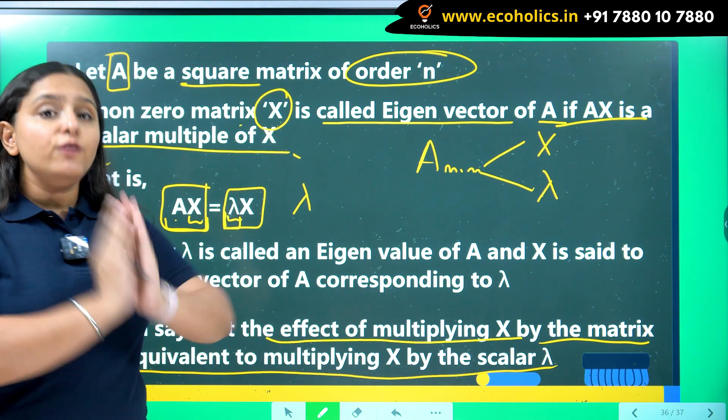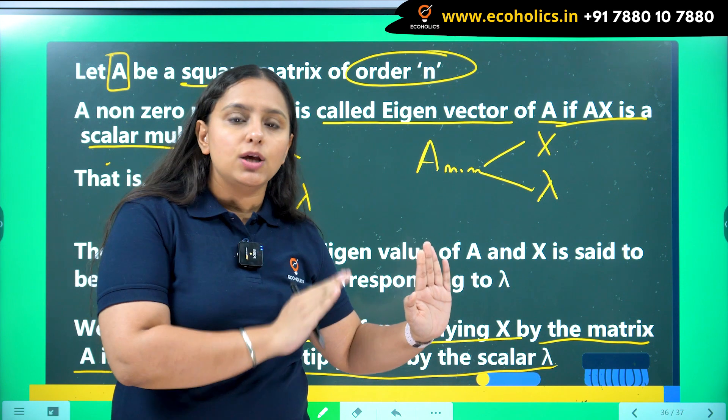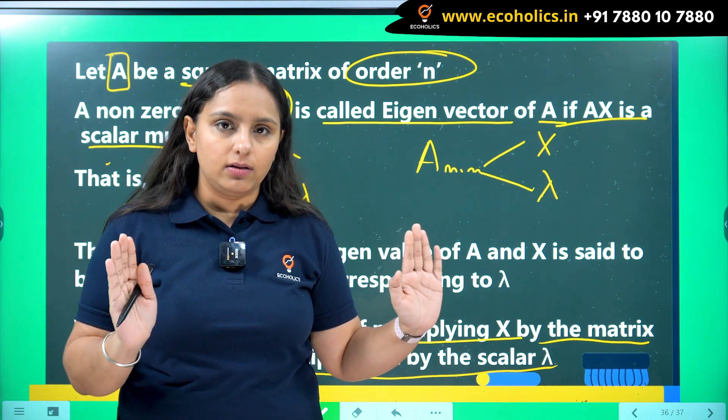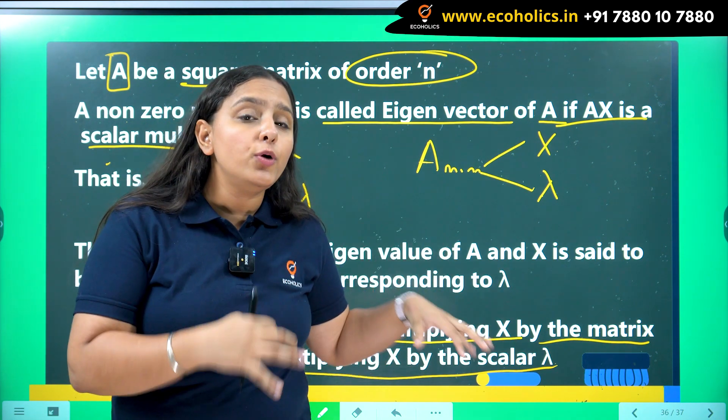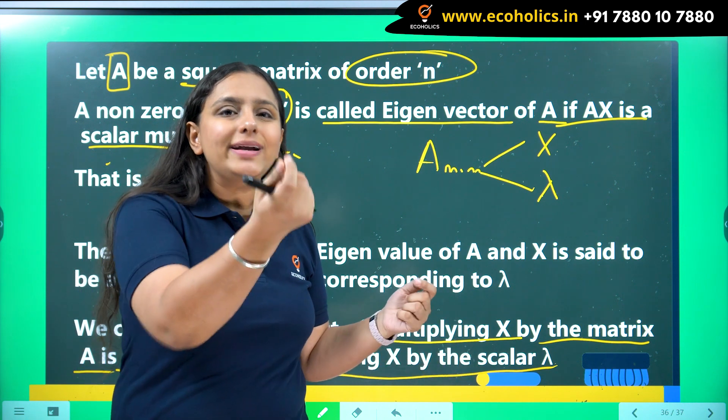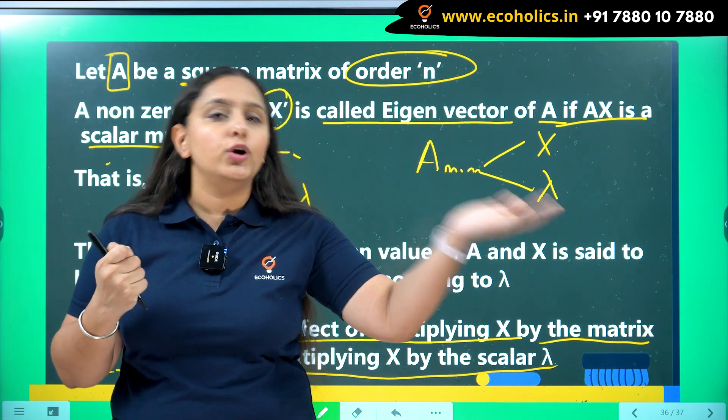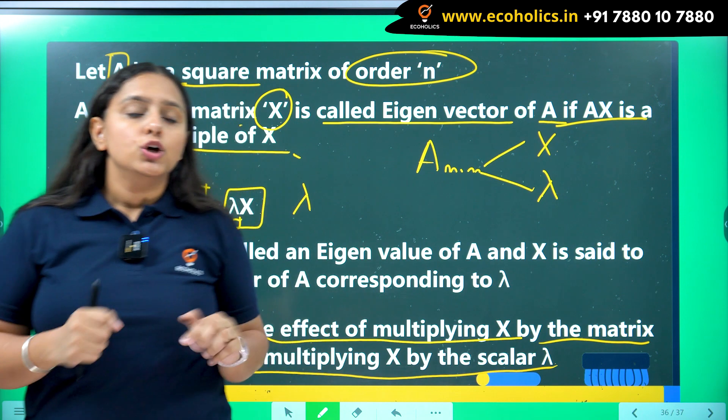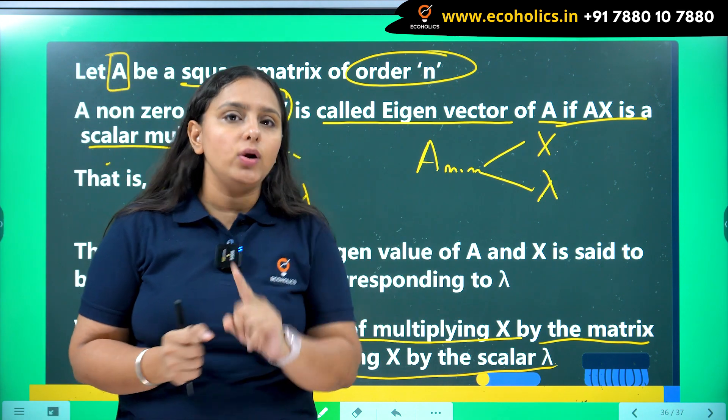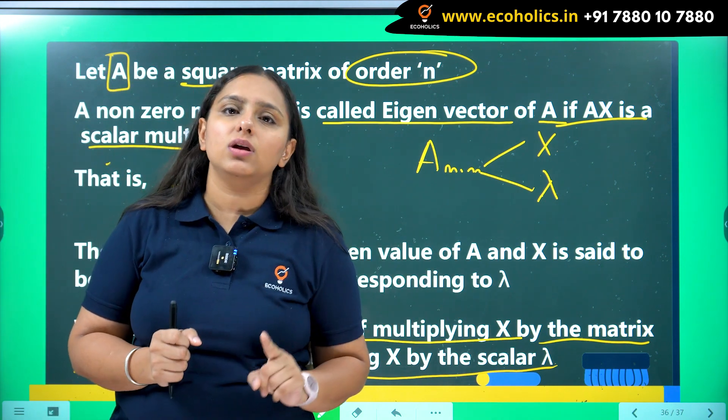So what are we understanding from this? It means that if you are multiplying the matrix with its eigenvector, from the product of them, you can take out a scalar and the remaining would again be your eigenvector. So if it is possible, then only you can call that X as your eigenvector, otherwise not.